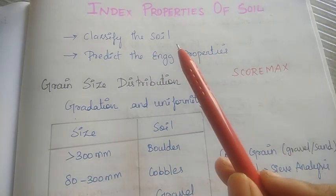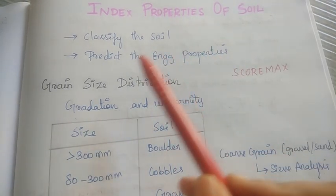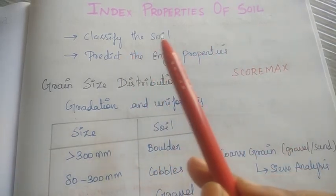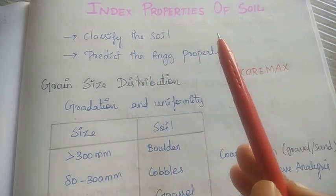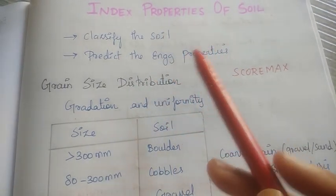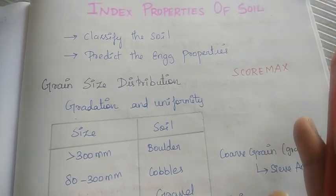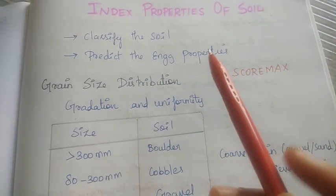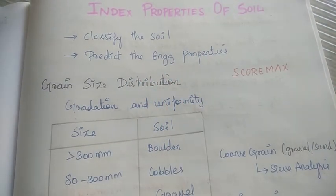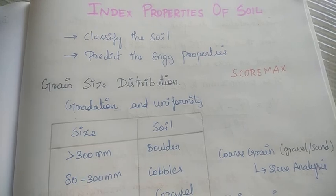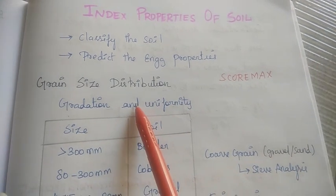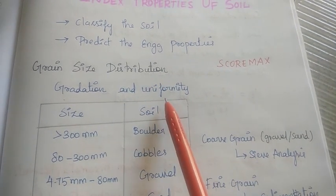Let's talk about our video. If you are going to study soil, we will cover soil in the class. We are going to talk about engineering properties. Now, we are going to talk about grain size distribution. What is grain size distribution? It is gradation — the soil is graded. We are going to determine the uniformity.